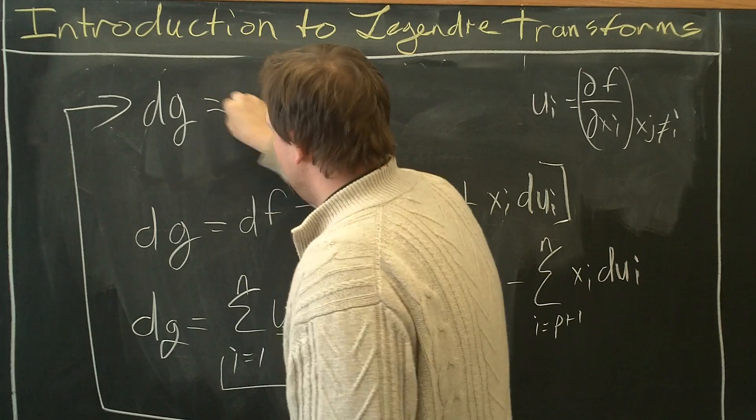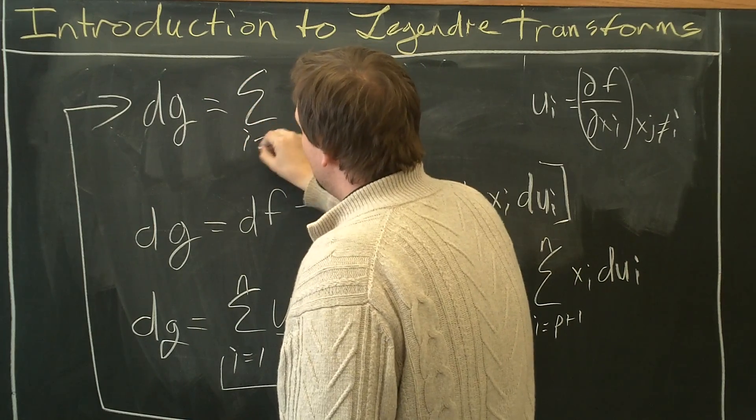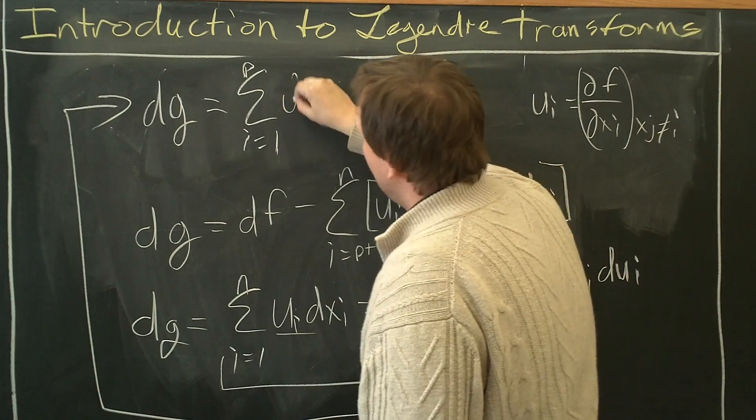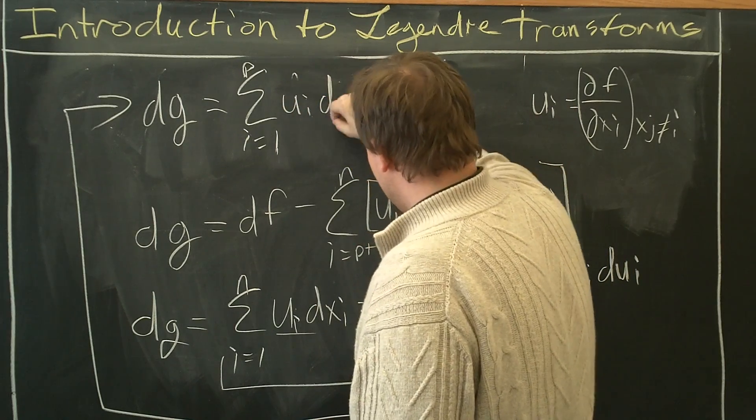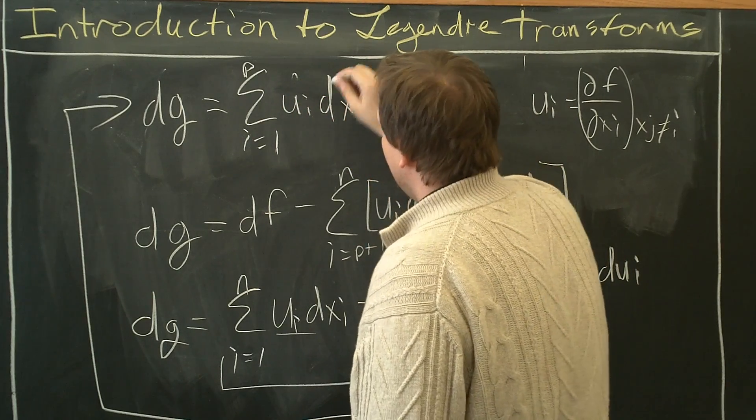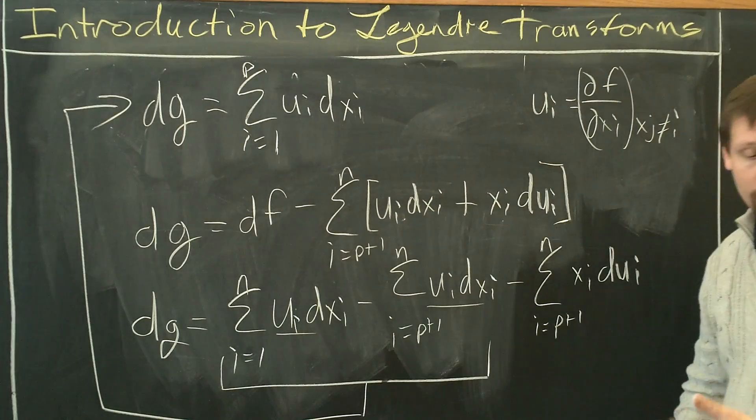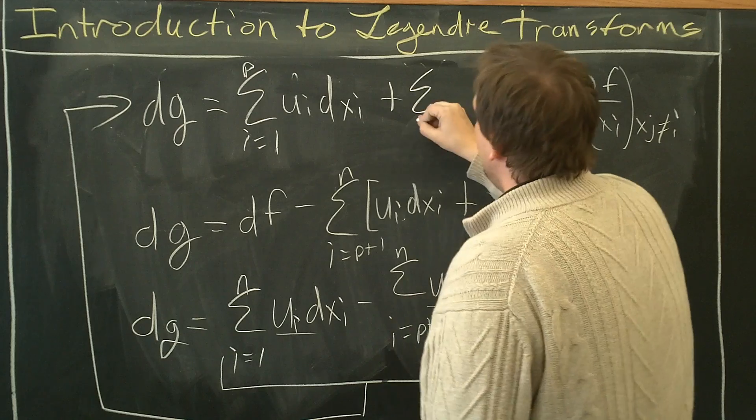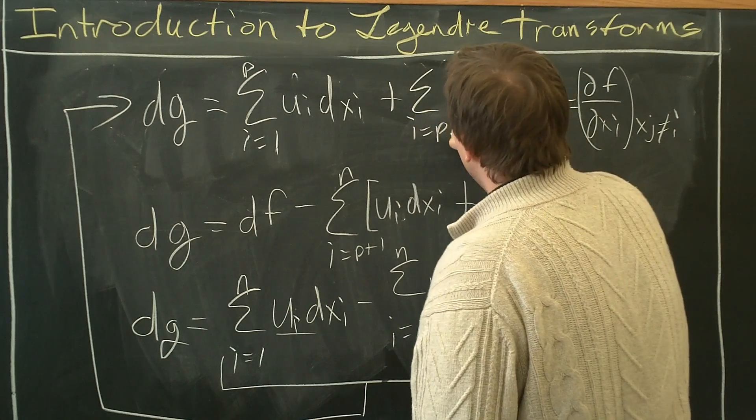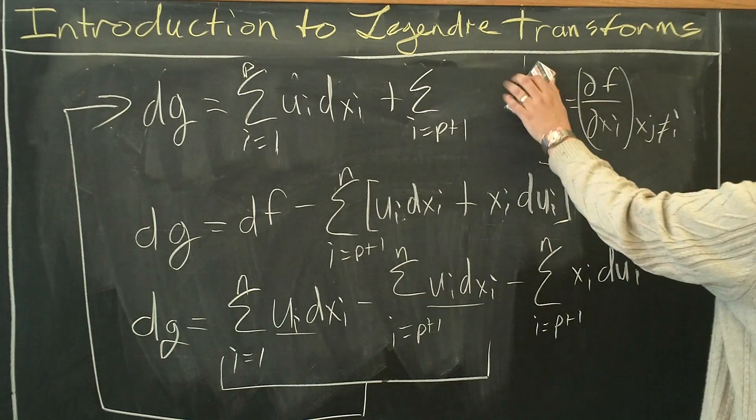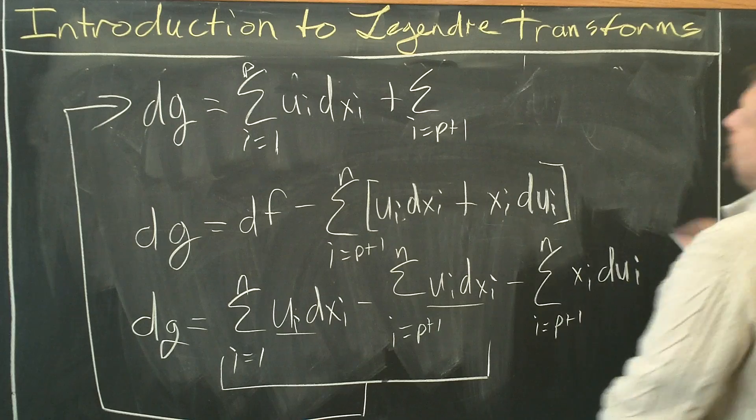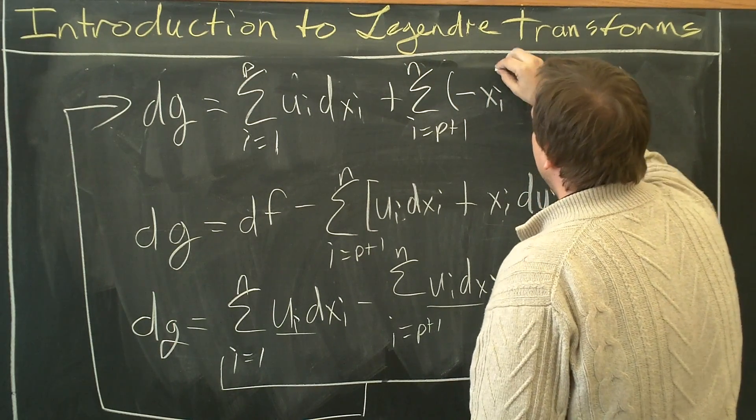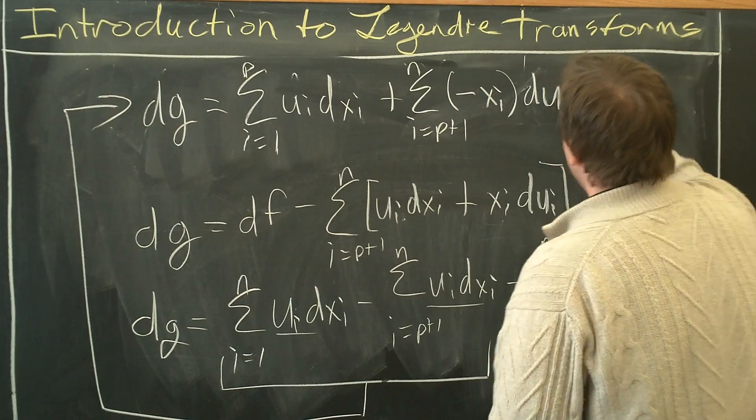dg equals sum i equals 1 to p of ui dxi, and we still have the remainder left from before. Plus, I'm just going to move the minus sign inside, i equals p plus 1 to n of minus xi dui.